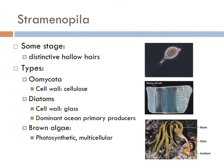Another group is the straminopila. They're really quite different, but the one thing they have in common morphologically is that at some stage of their life they have distinctive hollow hairs. The oomycota are a distinct phylogenetic lineage of fungus-like eukaryotic microorganisms. They are filamentous, microscopic, absorptive organisms that reproduce sexually and asexually, and include some of the most notorious pathogens of plants, causing devastating diseases such as the late blight of potato and sudden oak death.